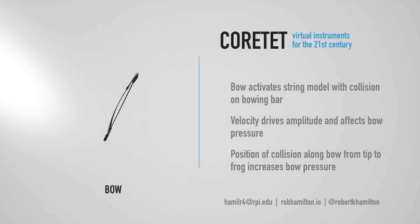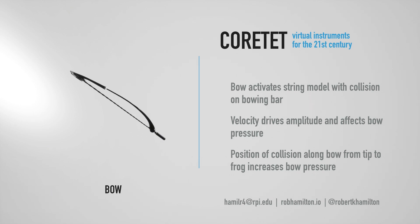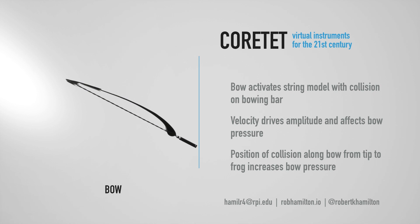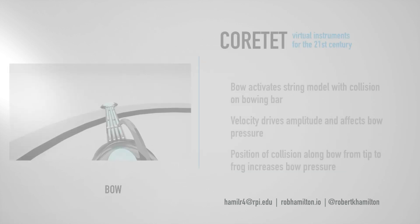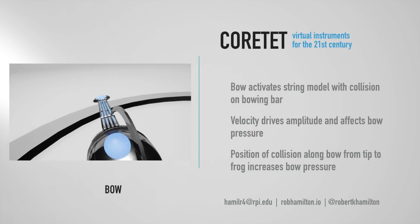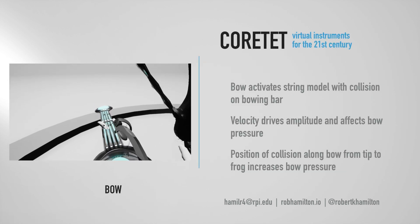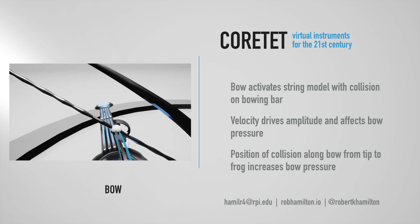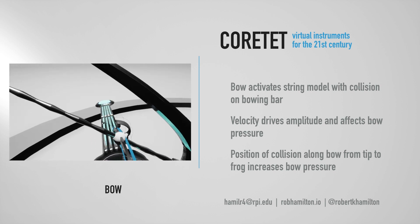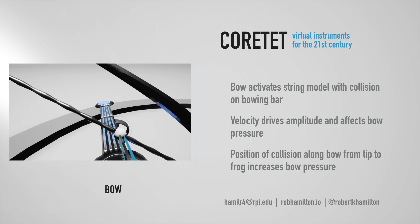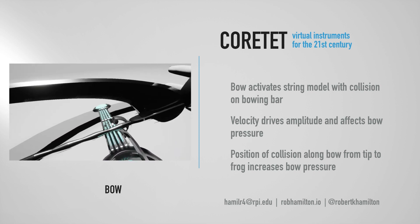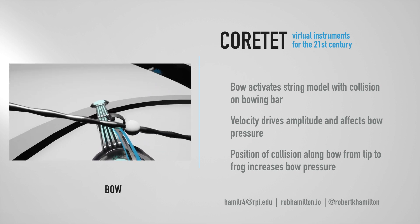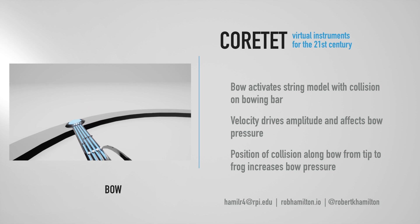The Quartet bow acts much like a traditional bow, activating each instrument's strings when it comes into contact with the bow pressure bar. The velocity of the bow controls note velocity and, to a lesser extent, bow pressure, which is primarily controlled through the combined locations of collision along both bow and bow pressure bar.